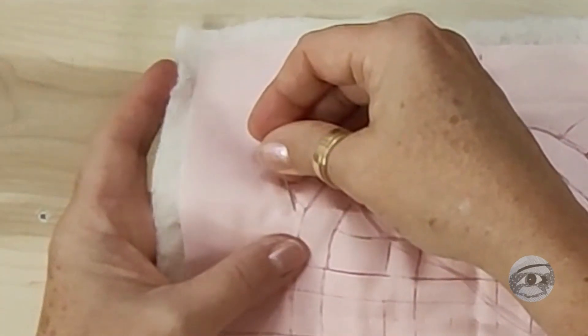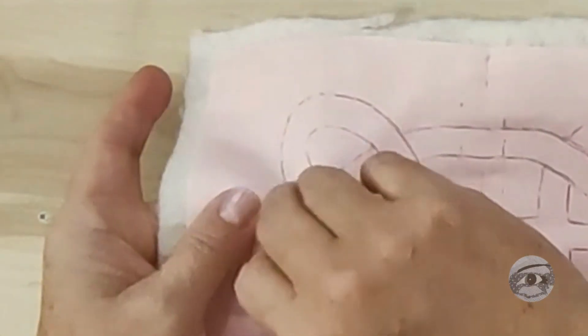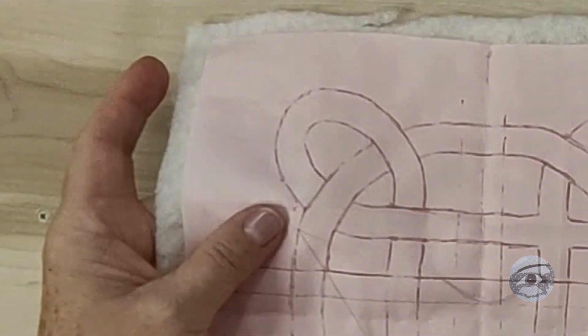The first stitch doesn't need to follow the pattern lines exactly but should anchor the thread between the backing and the front layer.